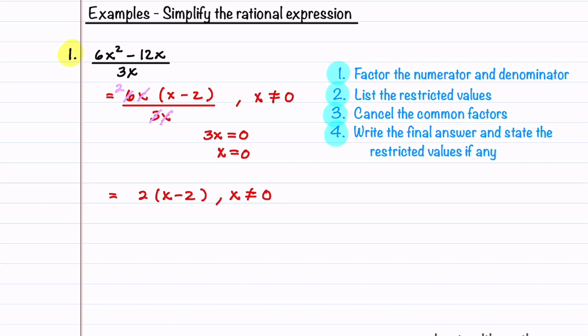It's really important to put that restriction because with our final answer there is no denominator, so we wouldn't know from looking at 2 times x minus 2 that x equals zero was restricted unless we wrote that down. Let's highlight our answer.